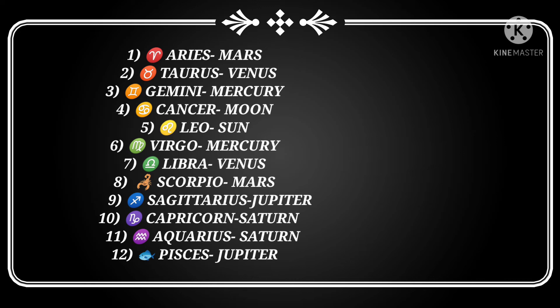Now the second thing is that if you observe this chart clearly, except Sun and Moon, all the other planets rule over two signs. Also, these 12 signs have their own intrinsic qualities and their qualities are similar to those of the planets that rule over the signs.